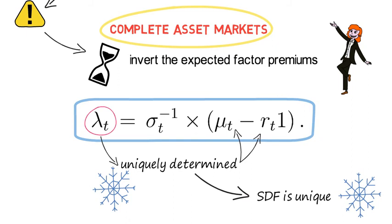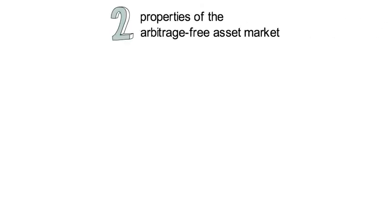Now I want to end this video with the summary of two properties that every arbitrage-free asset market shares. I will not prove these properties in that video here. Yet I will post an additional video that contains the proof. Now here I just focus on the takeaway.